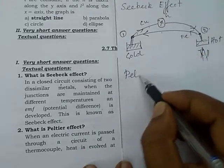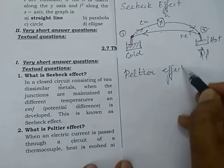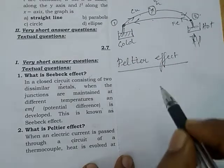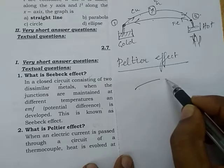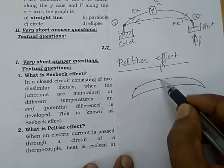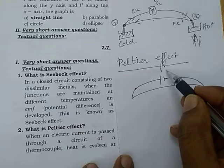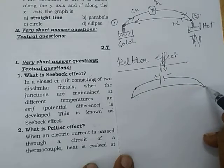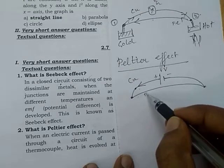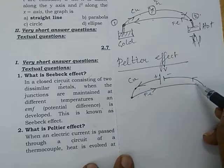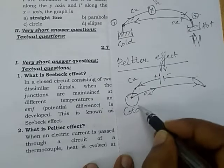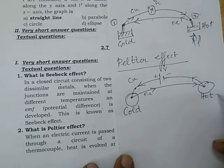Peltier effect in detail: it is the reverse of Seebeck effect. Take a thermocouple of copper and iron, and apply a battery providing potential difference V. Current flows from positive to negative — through copper and iron. One junction becomes cold (heat absorbed) and the other becomes hot (heat evolved).